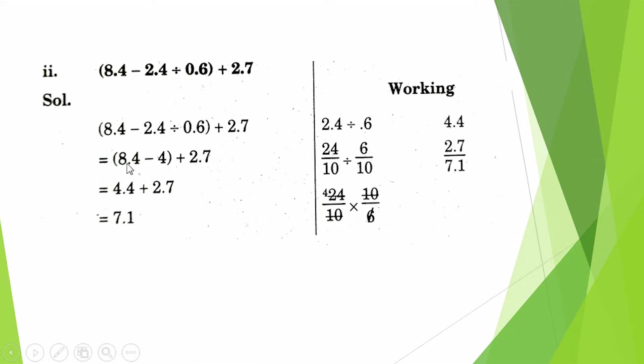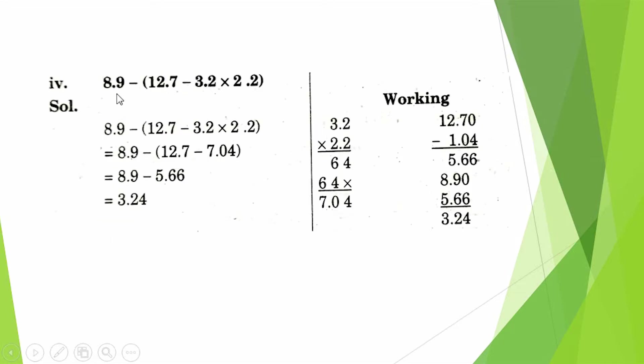8.4 minus (2.4 ÷ 0.6) + 2.7. First of all we solve 2.4 ÷ 0.6 in brackets. The answer becomes 4. When we minus 4 from 8.4, answer comes as 4.4. Then add 2.7. When we add these two values, answer becomes 7.1.